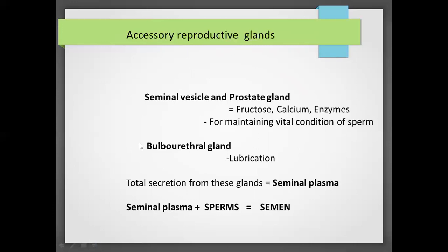There are two types of accessory glands: the seminal vesicle and the prostate gland. The seminal vesicle is a paired gland, and the prostate is a single reproductive gland.